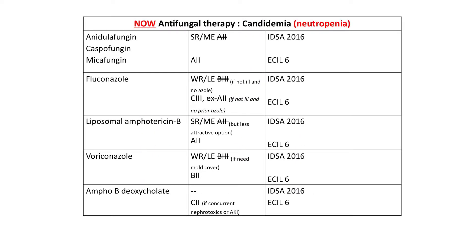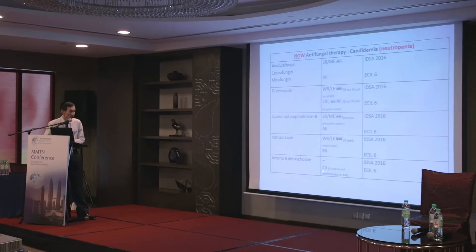The current latest guidelines comparing IDSA and ESIL recommendations for treatment of candidemia in the neutropenic cohort: it's still echinocandins first. Fluconazole has been downgraded in view of recent evidence to a weak recommendation with low quality of evidence. ESIL is positioned much more strongly against fluconazole in most contexts — they put it as a C3 recommendation. There is still a role for ambisome of course, and some people think voriconazole can be used for additional mold cover. IDSA has completely removed the recommendation for deoxycholate, while ESIL put a C2, which is strongly advised against.